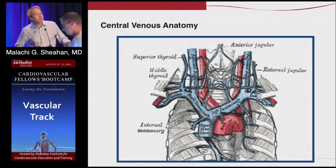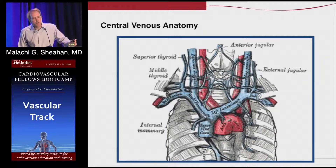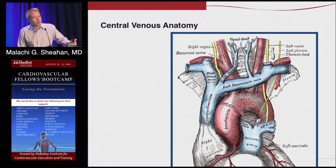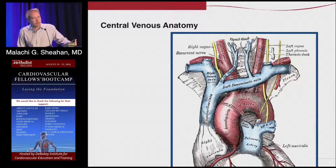Going centrally, the jugular veins meet the subclavian and form the innominate veins on each side. The right innominate vein is a relatively straight shot right into the SVC, which is why we prefer to do right-sided tunneled catheters. The left innominate vein can take a series of turns and be quite tortuous, and that's why putting a catheter in from the left side is more dangerous — someone without proper wire guidance can put their sheath right through that innominate vein into the chest.